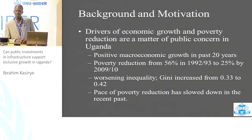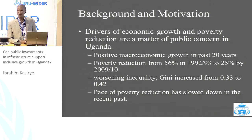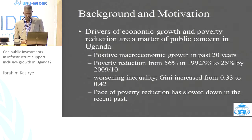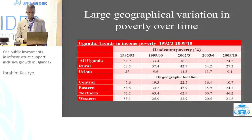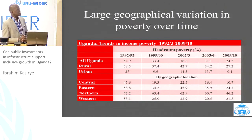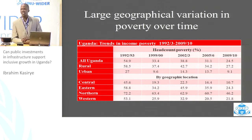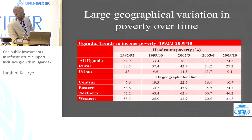During 1992-93 to the period 2009-10, the Gini coefficient, which is the standard measure of inequality, increased from 0.33 to 0.42. And as such, this has become a matter of public concern. We're seeing very high growth rates, considerable reduction in poverty, but the level of inequality is worsening, even within regions that are considered poor in Uganda. Also notably, the pace of poverty reduction has slowed in the recent past.